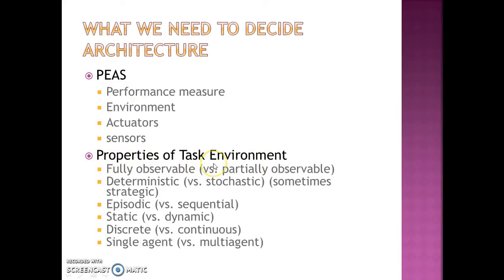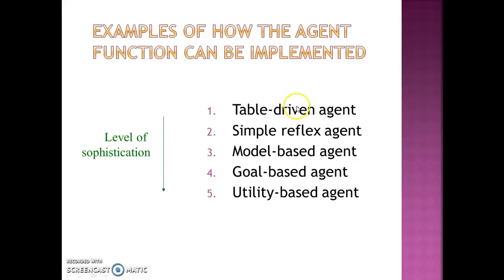The task environment is defined as the environment in which the agent is supposed to work. We have to choose from five choices of agent architectures. The model-based agent architecture contains information on how the world evolves irrespective of the agent and how the agent's actions can affect the environment. The goal-based and utility-based agent architectures also have model information inherent inside them. As we move from table-driven to utility-based agent architecture, the level of sophistication of the agent solution goes on increasing.